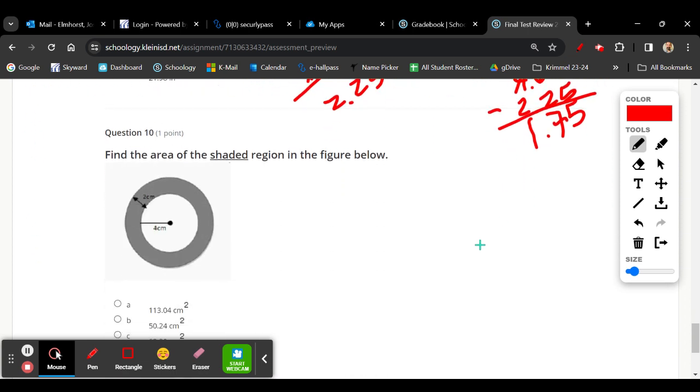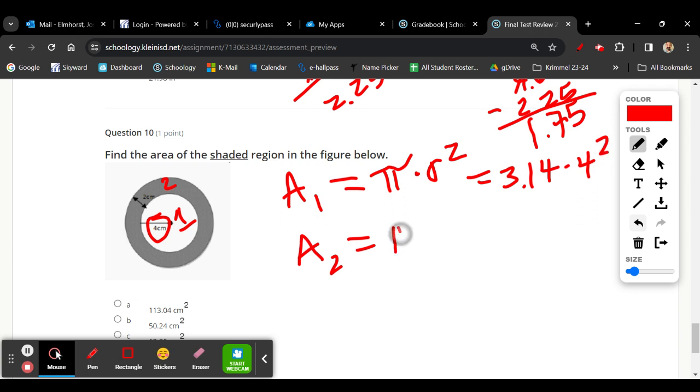All right, for the last question, we're going to find the area of the shaded region. Well, we need area 1, area circle 1, and the area of circle 2. We can call that the larger circle, and then find the difference between the two. So first, we need pi times r squared to find the area. So here is r, so 3.14 times 4 squared, and then pi times r squared, 3.14.